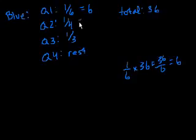How many did it score in the second quarter? Well, what's 1/4 of 36? You just multiply 1/4 times 36 and you get 9. 1/3 of 36, well that's 12.